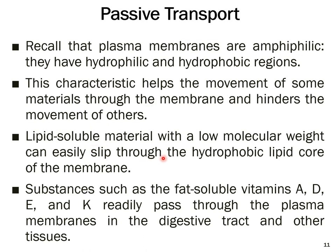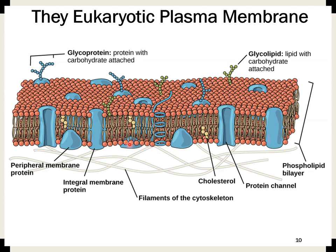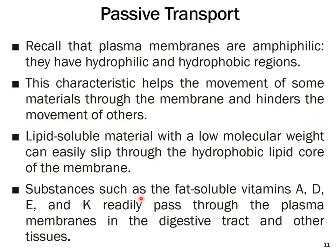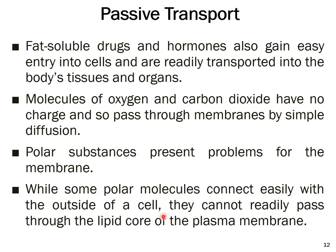Lipid-soluble materials with a low molecular weight can easily slip through the hydrophobic lipid core of the membrane. Fat-soluble vitamins A, D, E and K readily pass through the plasma membranes in the digestive tract and other tissues, being absorbed into the cells and into the blood. Fat-soluble drugs and hormones also gain easy entry into cells and are readily transported into the body's tissues and organs.